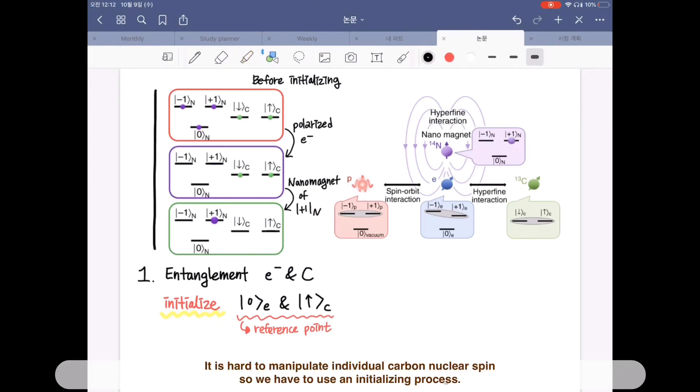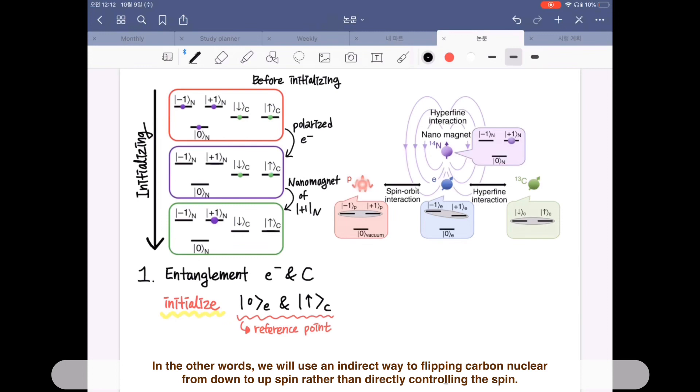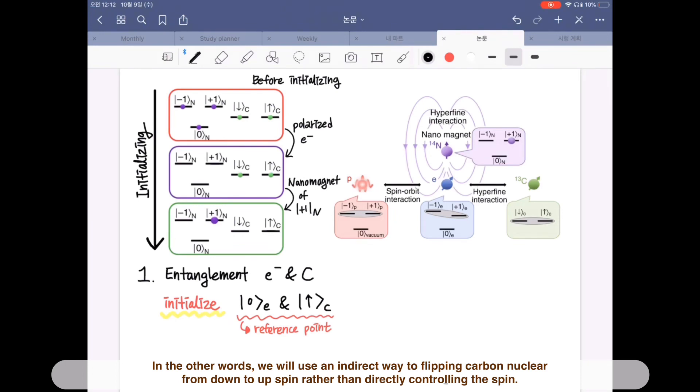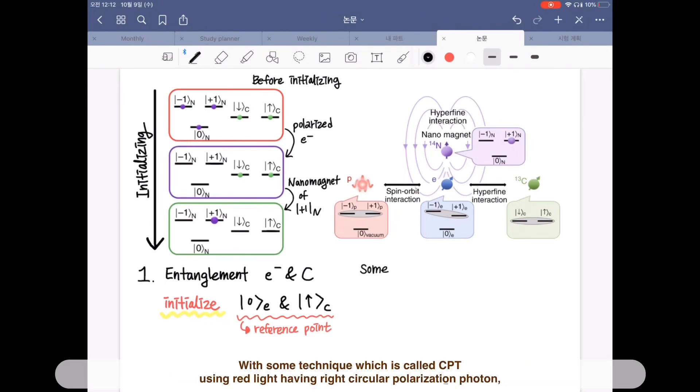It is hard to manipulate individual carbon nuclear spin, so we have to use an initializing process. In other words, we will use an indirect way to flip carbon nuclear from down to up spin rather than directly controlling the spin. With some technique,